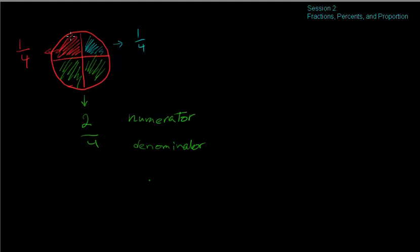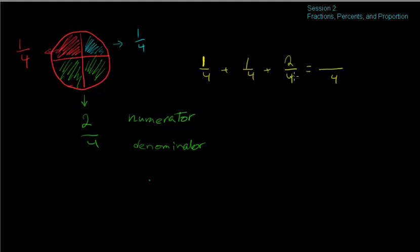Can we add these fractions and see how many slices of the pizza are gone? Yes, we can. We have one-fourth, another one-fourth, and two-fourths of pizza gone. We add them up. Because they have the same denominator, we add the numerators, and we can see that the whole pizza is gone.